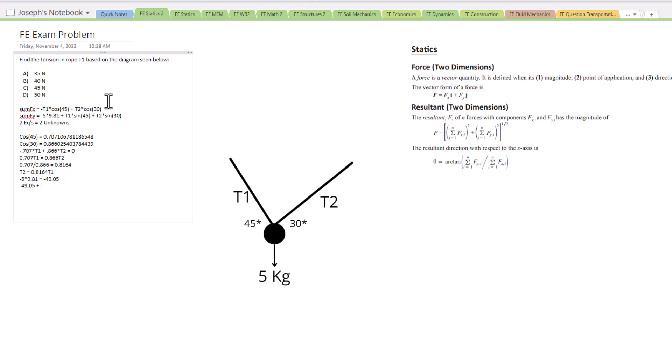Now we have plus. We still don't know T1 but we do need to find the sine of 45 degrees. 0.707 again. And now we know that the T2 equals 0.8164 T1.